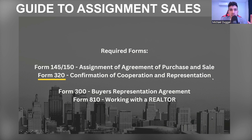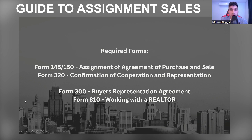What you need to know about assignments is there is the assignee and then there's the assignor. The assignee would be the purchaser, and the assignor would be the seller. What's especially important is that you do get a copy of the original agreement of purchase and sale — that's the document the assignor has, because they obviously purchased the property and those documents are what they're selling to the purchaser, being the assignee.